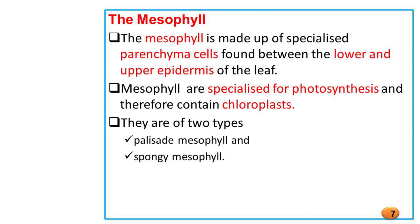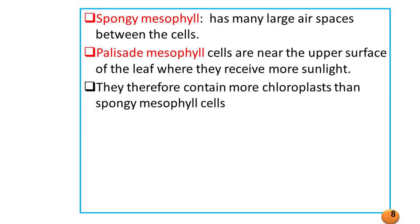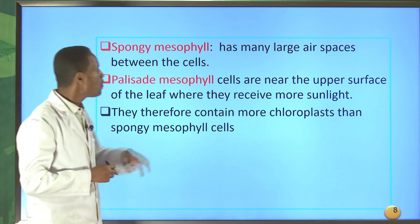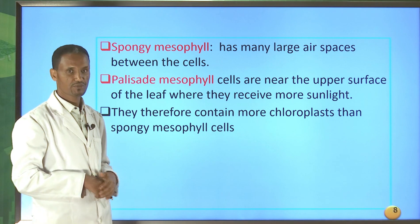There are two types of mesophyll: palisade mesophyll and spongy mesophyll. The spongy mesophyll has many large air spaces between its cells. The palisade mesophyll cells are near the upper surface of the leaf, where they receive more sunlight. They therefore contain more chloroplasts than the spongy mesophyll.